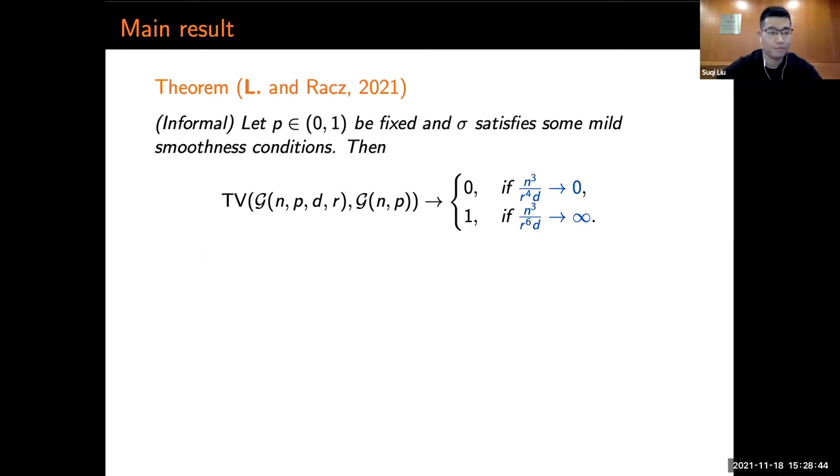Here is our main result. Suppose p is between 0 and 1 to be fixed, and that is we're in the dense regime. We also assume that σ satisfies some mild smoothness conditions. Then, if n^3 over R^6 times D goes to 0, then the total variation distance goes to 0.